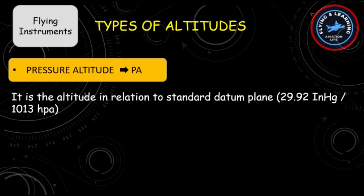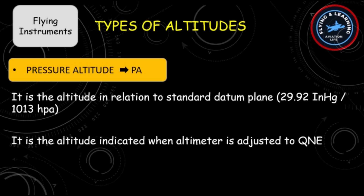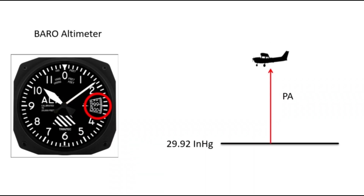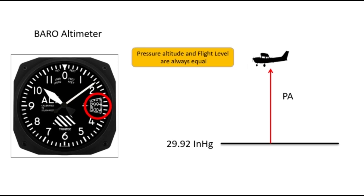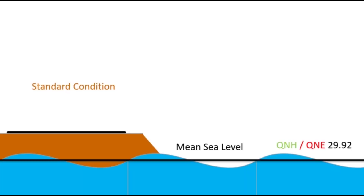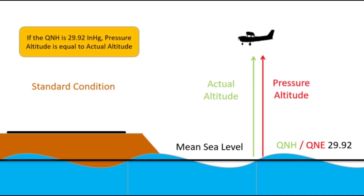Pressure altitude, also abbreviated as PA, is the altitude in relation to the standard datum plane. We can also say that it is the altitude indicated when the altimeter is adjusted to QNE. In this picture, the Kollsman window is adjusted to the standard setting of 29.92 inches of mercury, and the indicated pressure reading on the altimeter is your pressure altitude. The important point to remember is that pressure altitude and flight level are always equal. In standard conditions where outside atmospheric pressure equals the standard setting — that is, QNH and QNE are equal — your pressure altitude will be equal to actual altitude.